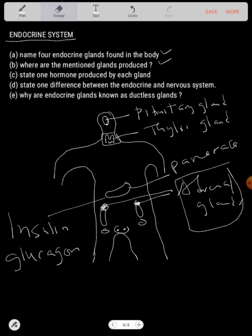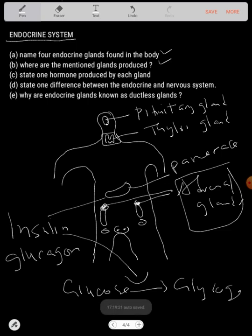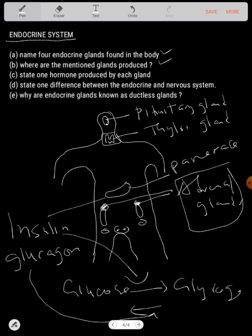If you want to convert glucose to glycogen, you use insulin. If you want to convert glycogen back to glucose, you use glucagon. They work in opposite directions. These are the two main hormones produced by the pancreas.